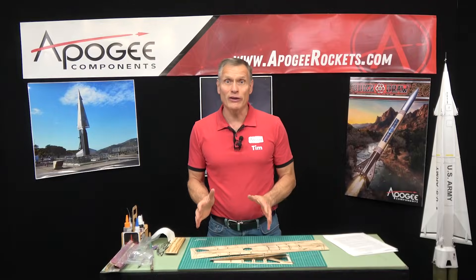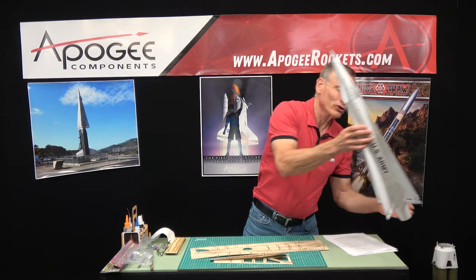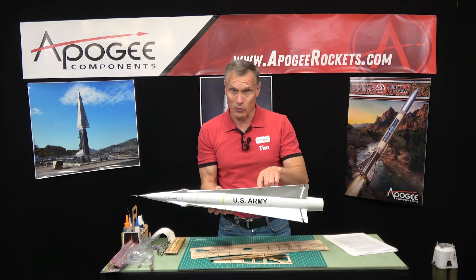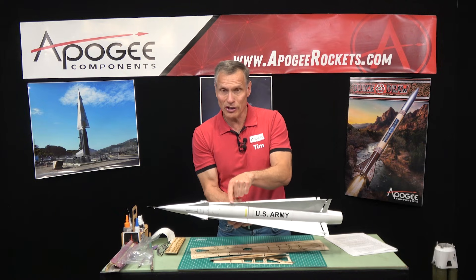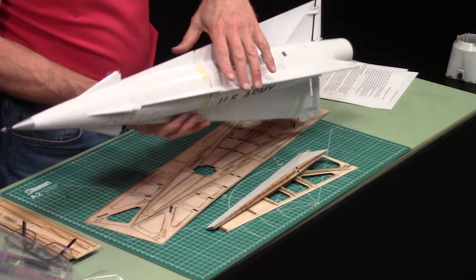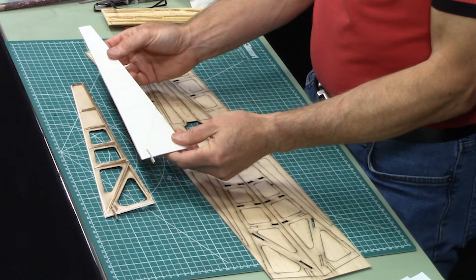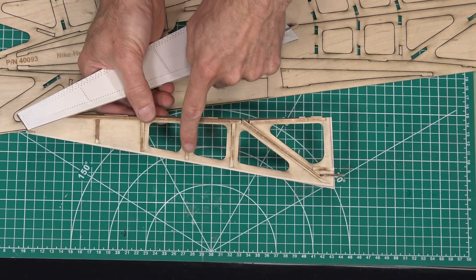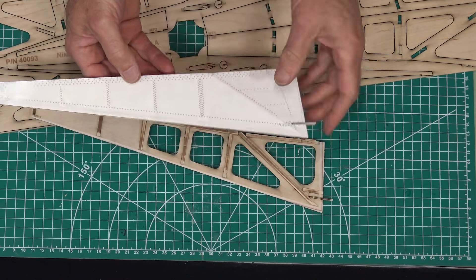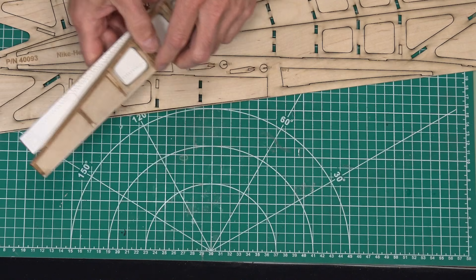We're going to go into step 106. On the Nike Hercules, the Hercules part, there's 16 fins here. There's one here, one here, one here, and one here. So there's a lot of work to do. In the first part, we're going to do this main fin. This is what it's going to look like when we're done. It's a framework of plywood with some basswood formers, then covered in a paper skin. It's lightweight, really strong, but it's a lot of work.